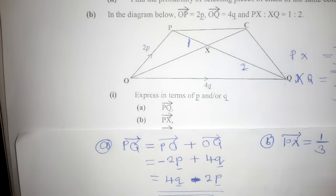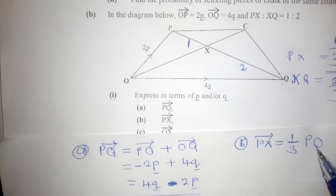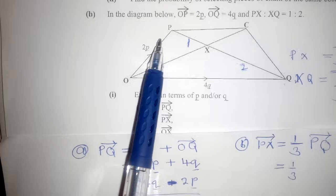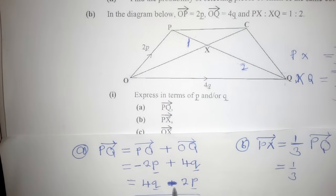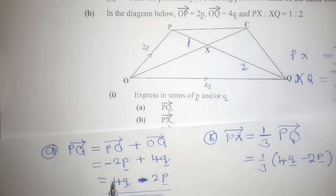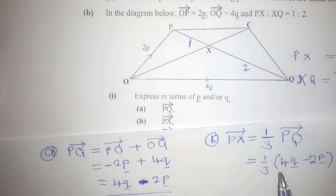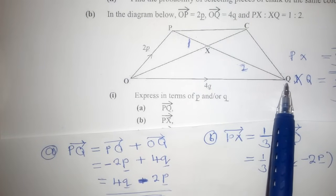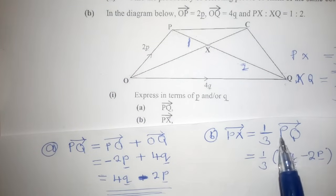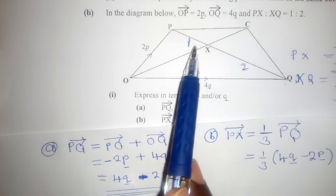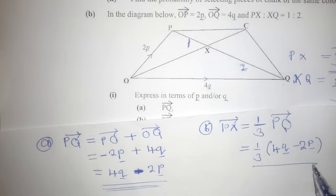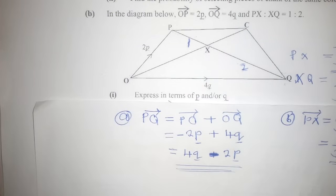So PX equals one-third of vector PQ. Vector PQ we found as 4q minus 2p. So PX equals one-third of (4q minus 2p). If we wanted to find XQ instead, we would have said two-thirds of PQ. We are finding PX, so we use one-third because PX is represented by 1. We are done with part (b).